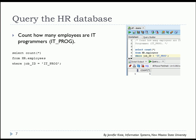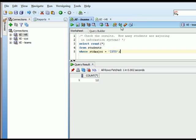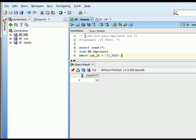Now let's take a look at the HR database. Let's see how many employees are IT programmers, where the job ID is IT underscore PROG. Let's go to SQL Developer and we'll run that command.